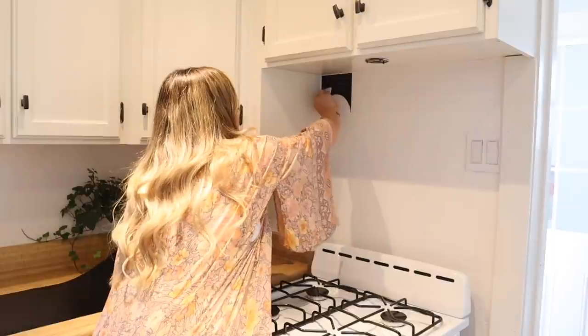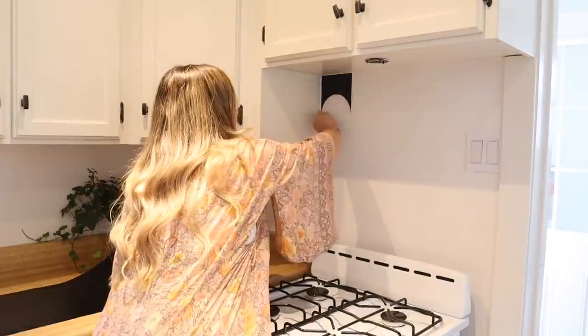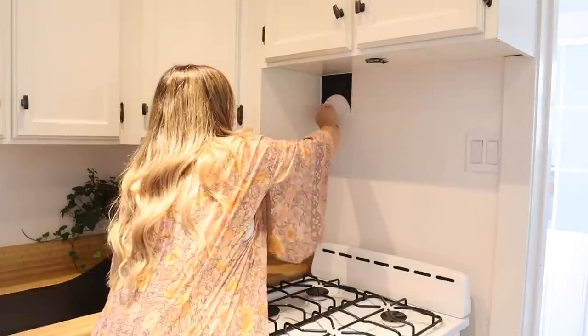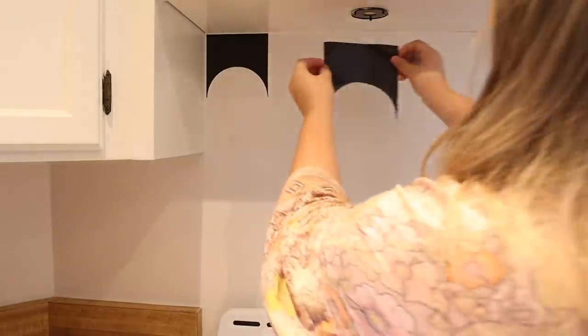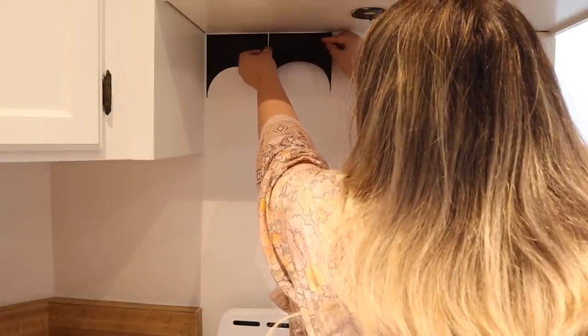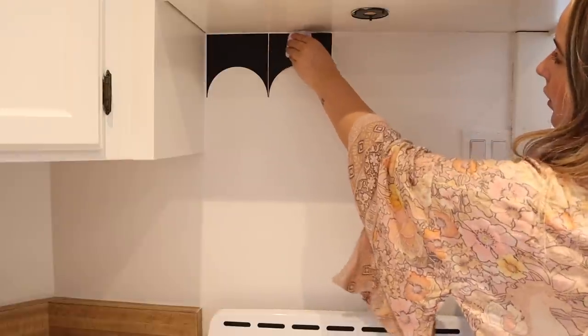After that, take your Cricut scraper and just make sure there are no air bubbles in your tile. The less air bubbles, the better it will look—more like tile and less like vinyl. When you add all of your next tiles, you're going to line it up and make sure again you still have that grout that's showing.